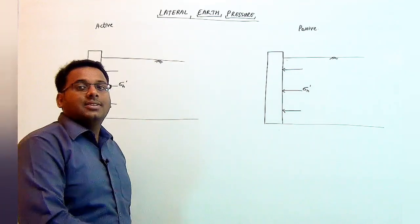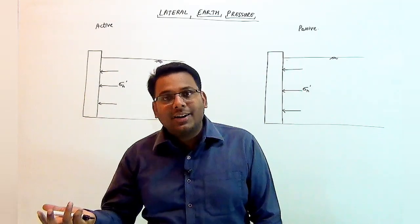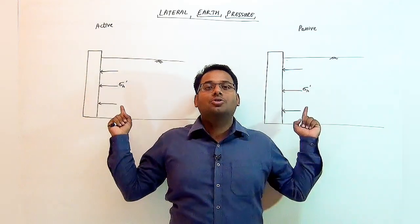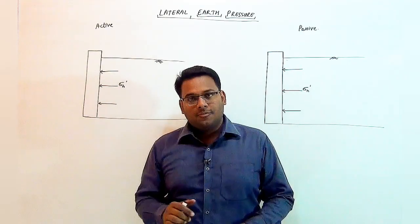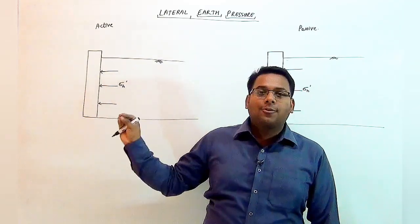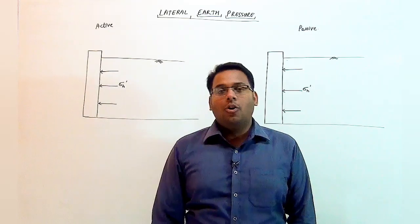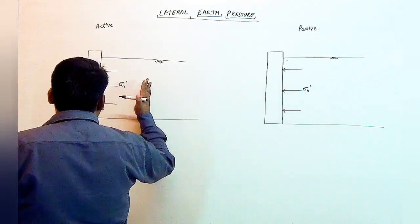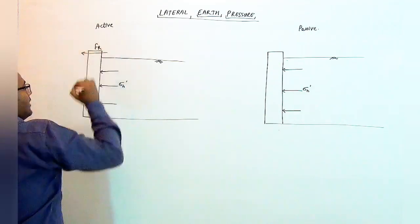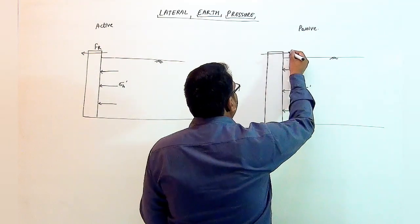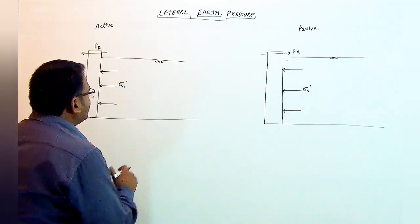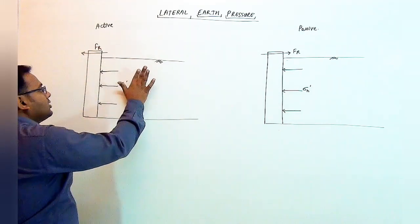The question is: which of the two cases — active or passive — will have greater horizontal stress? The answer depends on the direction of the net force. The soil is said to be in the active state if the net force on the wall acts away from the backfill, and in the passive state if the net force acts towards the backfill.